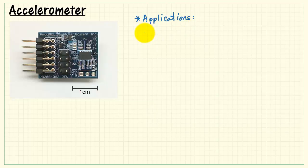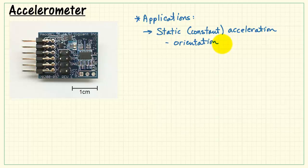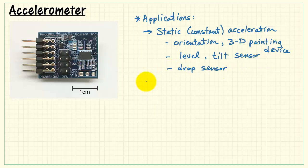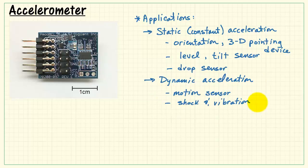Let's review some applications for the accelerometer. For static or constant acceleration, you can use an accelerometer to determine the overall orientation of your device. You could use it as a 3D pointing device, for example. You can use it as a level or a tilt sensor. You can also use it as a drop sensor. Dynamic acceleration, you can use this as a motion sensor and also to detect and measure shock and vibration.